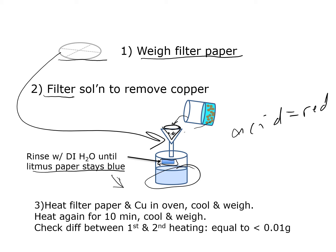Take your filter paper with the copper and heat it in the oven for about 10 minutes, then cool and weigh it. Heat it a second time for another 10 minutes, then cool and weigh it again. This is the same procedure as before — heating twice to ensure all water is removed from the filter paper. Check that the difference between the first and second heating is less than 0.01 grams. If it's not, heat it again until the filter paper is completely dry.